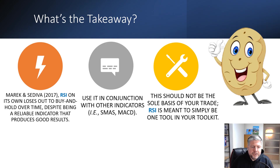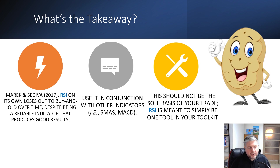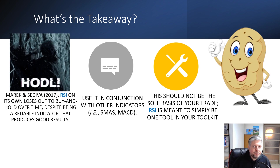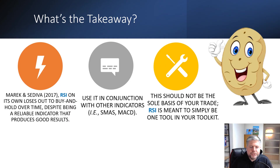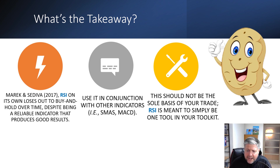What's the takeaway? There was a really cool study by Merrick and Sedeva in 2017. They looked at some economic indicators including the RSI, and on its own it loses out over time to buy and hold, despite being a good indicator that does give its own good results. Investing is not hard — monkey buy stock, monkey hold stock, monkey get rich. We use the RSI in conjunction with other indicators like the moving averages and the MACD — we'll cover the MACD in the next video. RSIs really aren't too useful on their own.